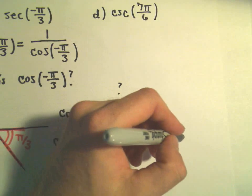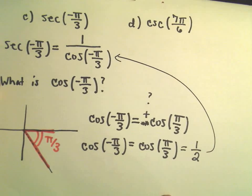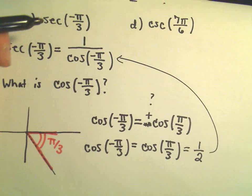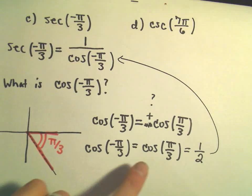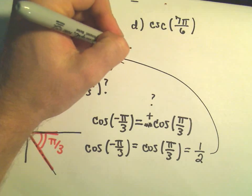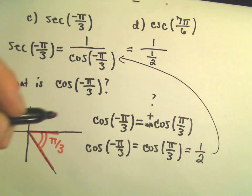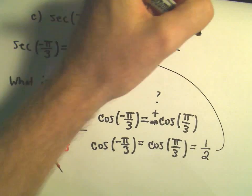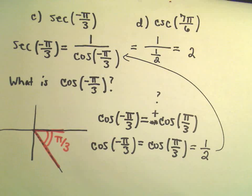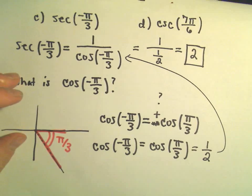Now we can plug that back in to our denominator. Secant of negative pi over 3 is going to be 1 over cosine of negative pi over 3, which we finally figured out was 1/2. So we'll get 1 divided by 1/2. 1 over 1/2 — you just flip the fraction — that gives us 2. So secant of negative pi over 3 is a fancy way of writing the number 2.